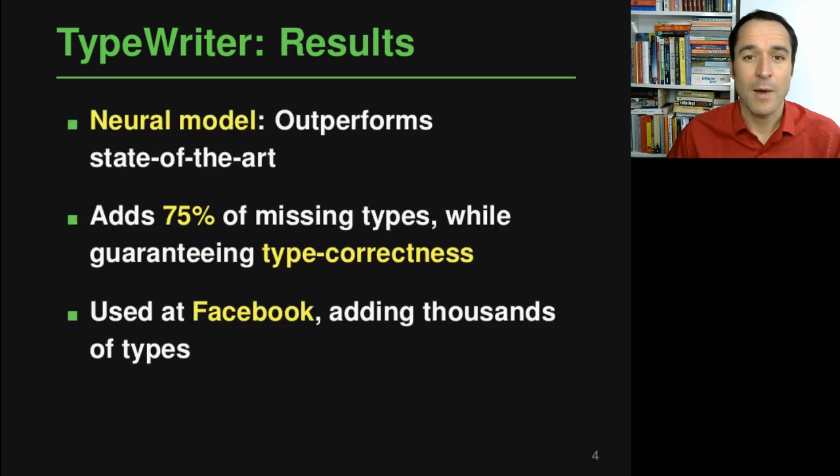Just to give you a few highlights of our results: the neural model that we are presenting outperforms the state of the art, so it can predict more types and predict these types more precisely than any other type prediction model that has been suggested earlier.